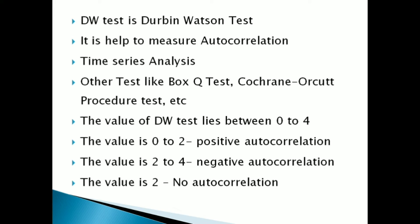When the value lies between 2 to 4, there is a negative autocorrelation. When the value is 2, there is no autocorrelation problem in our time series data.